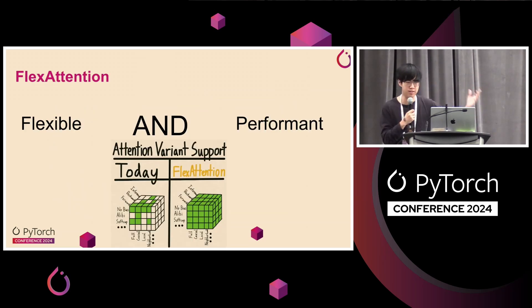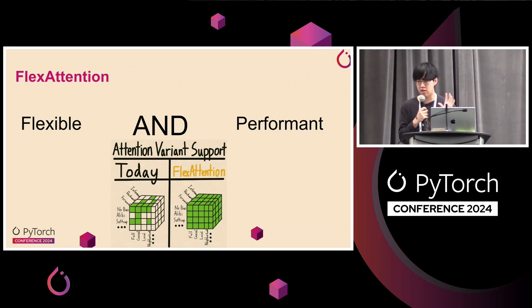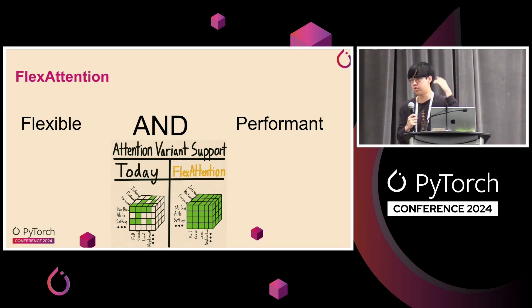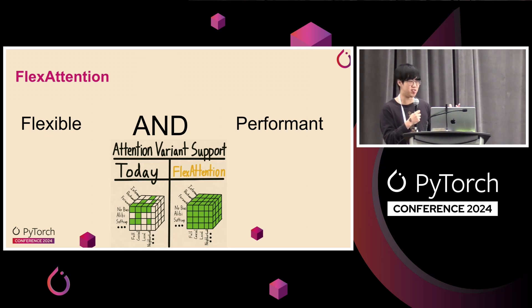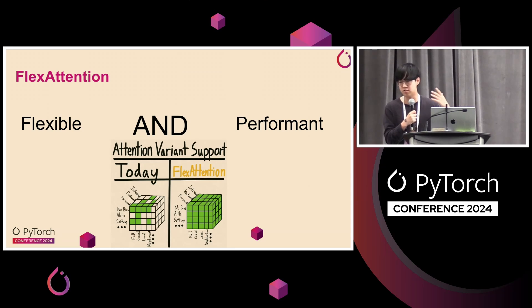To take this full circle: prior to Flex Attention, you had to choose between flexibility — a PyTorch native attention kernel — versus a performant attention kernel like Flash Attention 3. But today with Flex Attention, you can get the best of both worlds: both flexibility and performance. Hopefully you'll never run into a situation where you have a cool new attention variant that Flash Attention 3 just doesn't support. Hopefully you guys have fun with this API. Thank you.